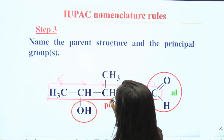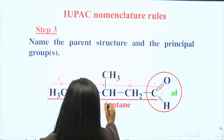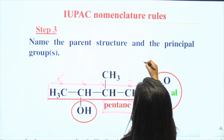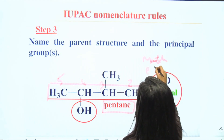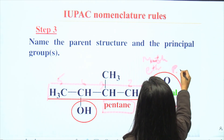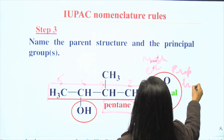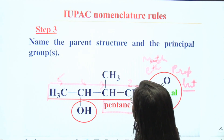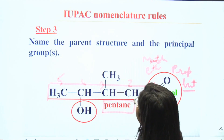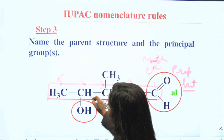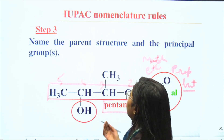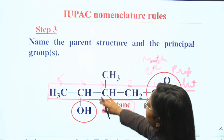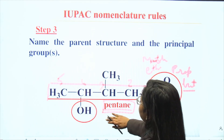In the main principal chain there are 5 carbons present, so we call it pentane. For 5 carbons we use 'pent', for 1 we use 'meth', for 2 we use 'eth', for 3 'prop', for 4 'but' — the full list is available. So for 5 carbons we use 'pent', and since there is no multiple bond — no double or triple bond — it is an alkane, so we call it pentane. This is the name of the principal chain.